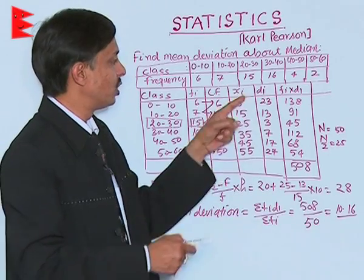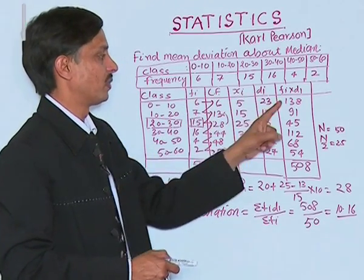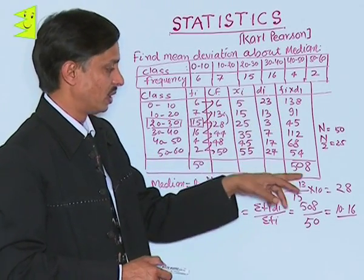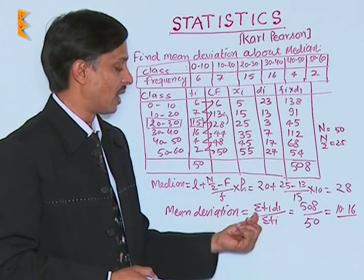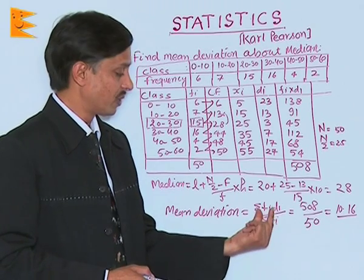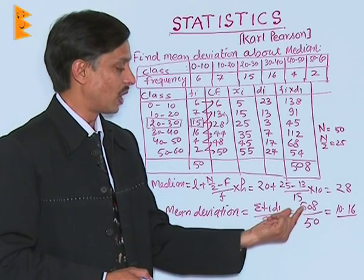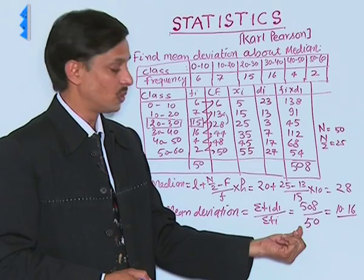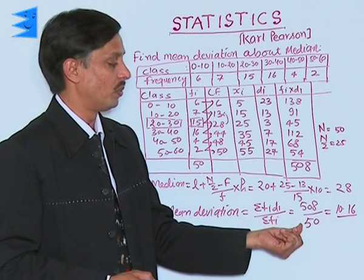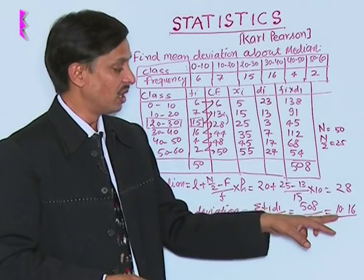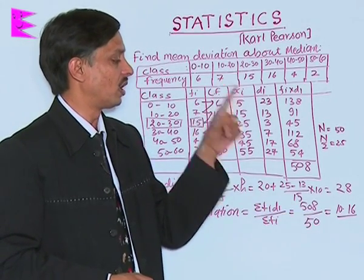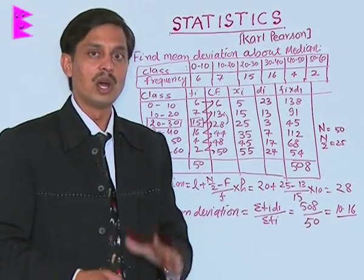All these deviations need to be multiplied with Fi. This becomes Fi into Di. Their sum is 508. Mean deviation in this situation is sigma Fi Di upon sigma Fi. Sigma Fi Di is 508 upon 50. On dividing we will get 10.16. So mean deviation about median of the given table is 10.16.